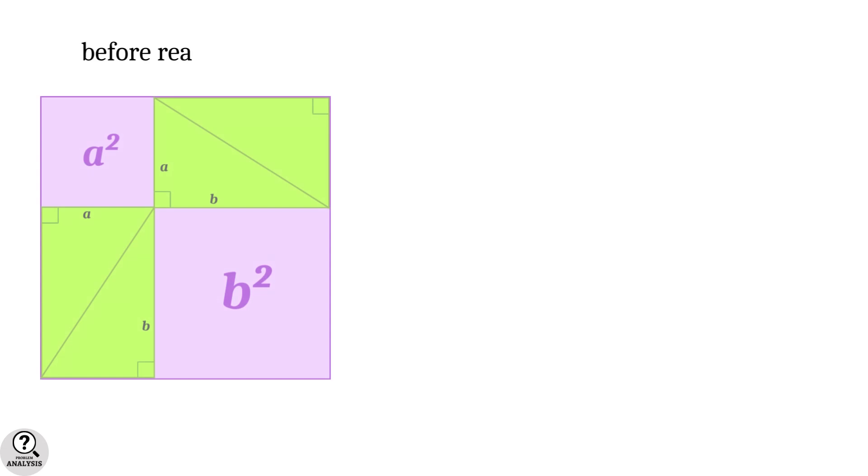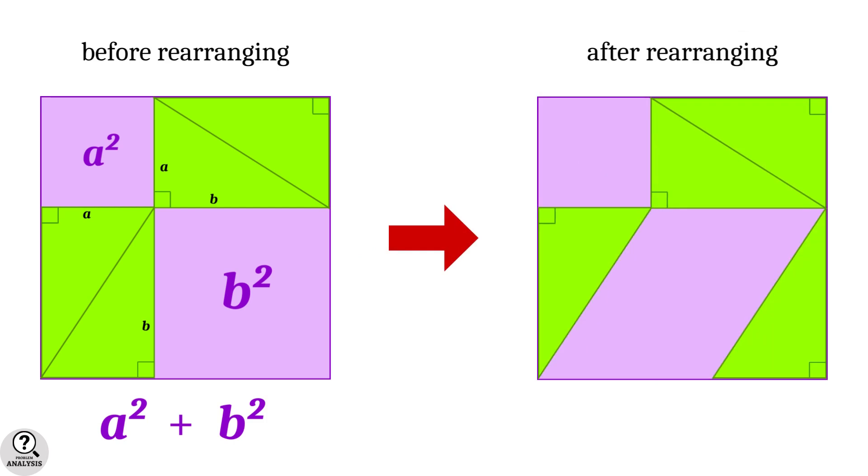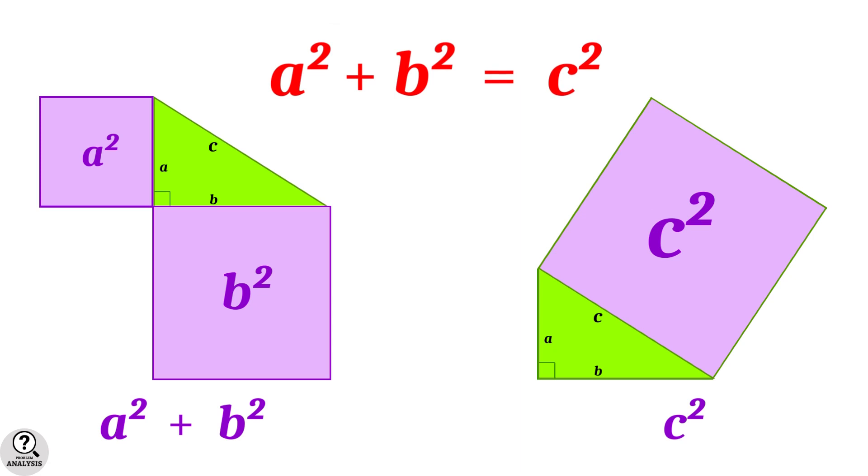So, before rearranging the triangles, the total area was a² + b². And after rearranging, it became c². And that means, c² = a² + b². And that is the geometrical proof of Pythagoras theorem.